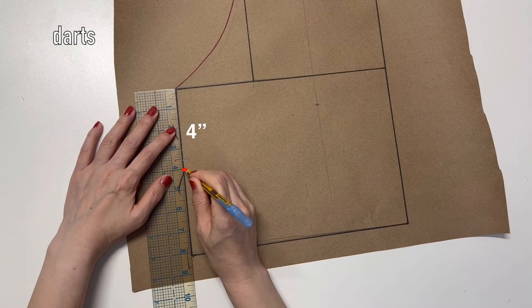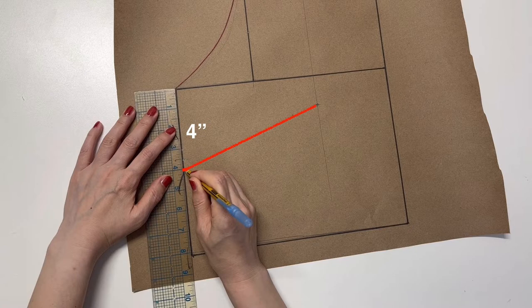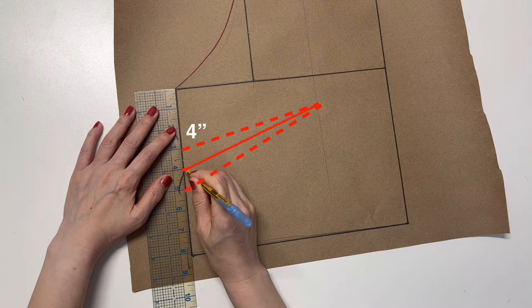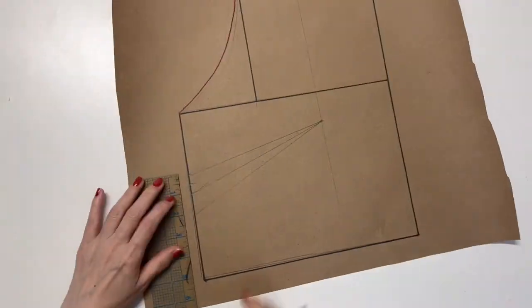Mark 4 inches from the armpit on the sideline and connect to the bust point. Draw lines one inch apart on each side. If your bra cup is C or larger, add an extra inch increment.